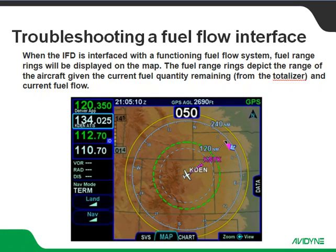Now getting into troubleshooting these fuel flow interfaces. In flight, when the aircraft is moving and we've got good fuel flow data, we should see these range rings. If you're not taking these on a test flight it might not be as obvious what your remaining fuel range will be, because a lot of this fuel totalizer and current fuel flow information is based off your current airspeed and all that. It takes all of that into account. So I wouldn't use this as a rule of thumb to check for range rings when you're just sitting in the hangar with the engine not running, but there are a couple other ways we can verify it's working correctly.